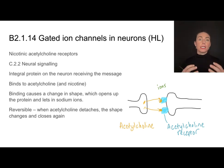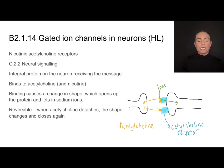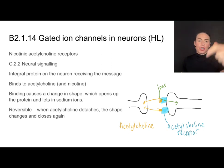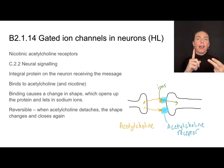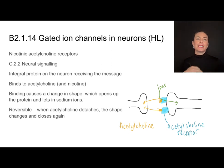When acetylcholine binds, it causes a change in the shape of the acetylcholine receptor and opens up the protein — that gate mechanism we discussed. When that happens, it allows ions that are outside of the cell to move into the cell, kicking off a whole sequence of events that causes an action potential or nerve transmission to happen. It's important to understand the form and function of these proteins — it is both a receptor and a channel protein for ions. This is all reversible: if acetylcholine detaches, the shape changes and the gate closes.